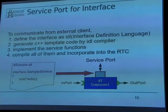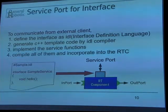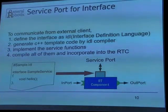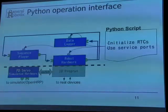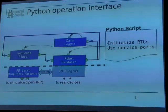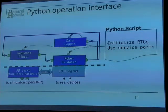Regarding the service port interface: to communicate from external clients such as a Python script, you need to add a service port. First, define the interface as IDL. Second, generate the template code using the IDL compiler, implement the service functions, compile all of them, and incorporate them into the RTCs. Then you can send messages to the RTCs via Python scripts through the service port. Python scripts initialize the control system and get references to the service ports using the RTC manager, allowing you to control everything inside the system.